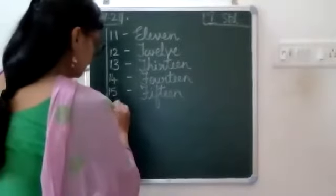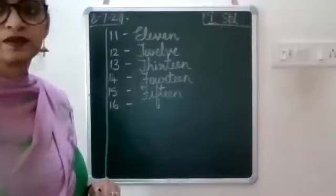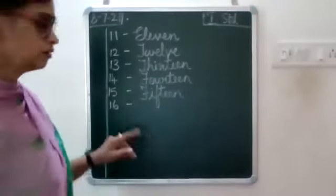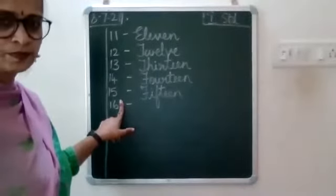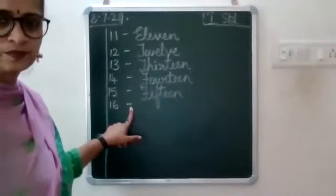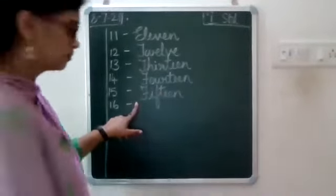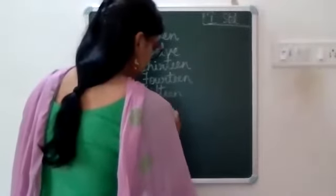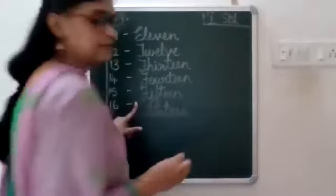After you have written 15, leave a line, write 16. Leave one finger space, put a small dash, then again leave a finger space, write capital S-I-X-T-E-E-N, 16.